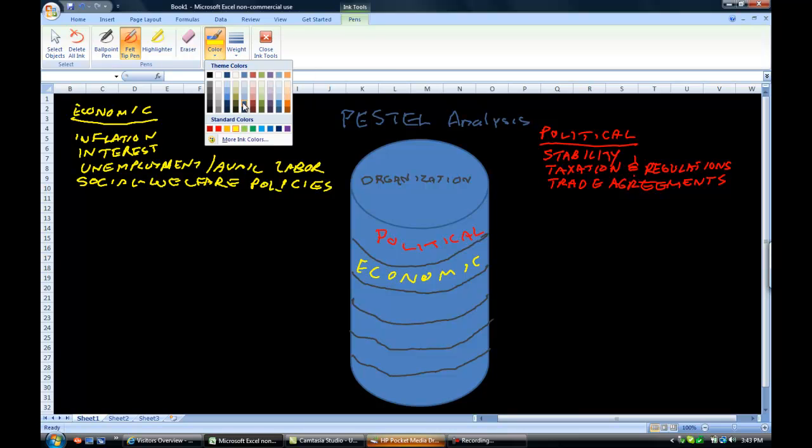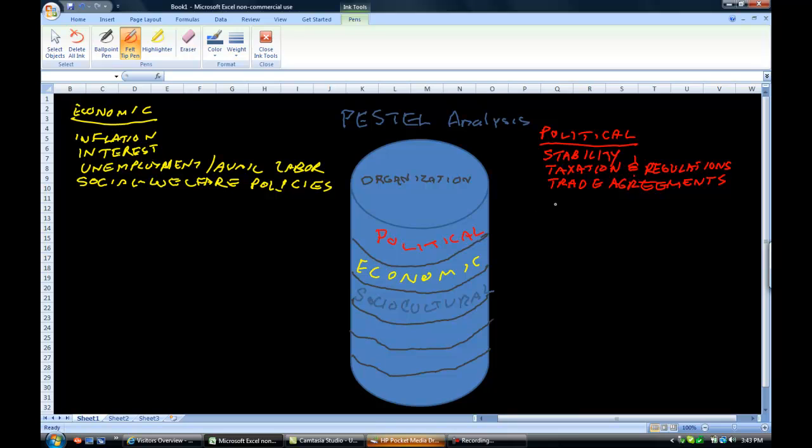So let's grab another color. Let's grab a green this time. And the next letter is S in PESTEL. So we're going to put sociocultural here. Doesn't look like a very good green, but we'll use it anyway. And we'll list those out over here. Sociocultural.